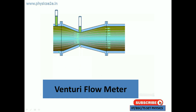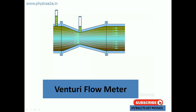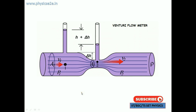The first part is the inlet, and this area is the throat. At the throat area, the height decreases; at the normal area, the height increases. This is the mechanism of the Venturi flow meter. At the entrance, the area is a1 and the pressure is p1, and the velocity is v1. At the throat, the area is a2.